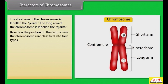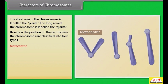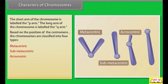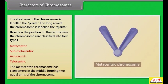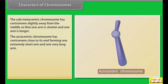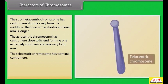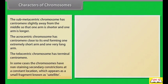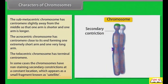On the sides of the centromere, disc-shaped structures called kinetochores are present. The short arm of the chromosome is labelled the P-arm, and the long arm is labelled the Q-arm. Based on the position of the centromere, chromosomes are classified into four types: metacentric, sub-metacentric, acrocentric, and telocentric. The metacentric chromosome has the centromere in the middle, forming two equal arms. The sub-metacentric has the centromere slightly away from the middle. The acrocentric has the centromere close to its end. The telocentric chromosome has a terminal centromere. In some cases, chromosomes have non-staining secondary constrictions at constant locations, which appear as a small fragment known as a satellite.